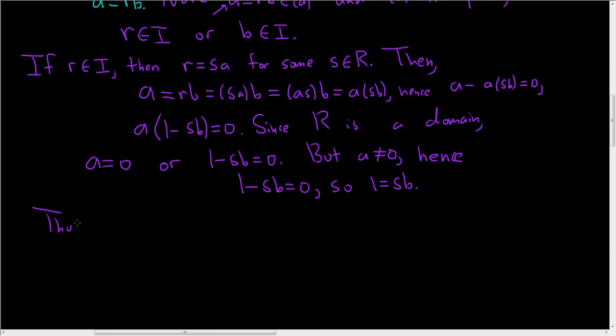Thus, b is a unit. And so if b is a unit, we can do the following. So then, 1 can be written as b inverse, because it exists, because b is a unit, times b. This is an element of R. And this is b. So it's in the ideal generated by b, which is equal to J. So J contains 1.